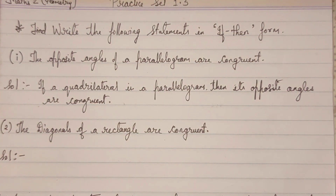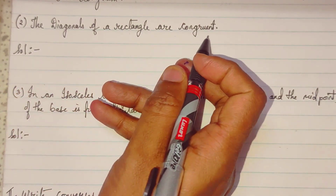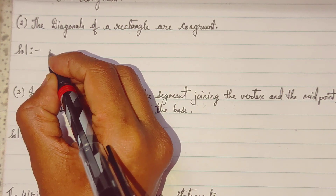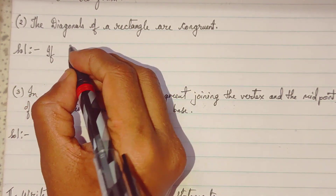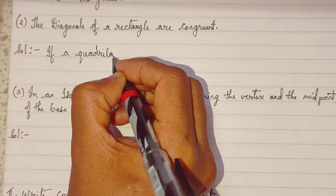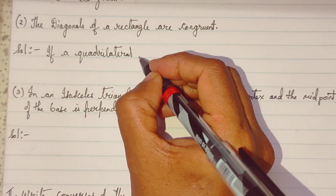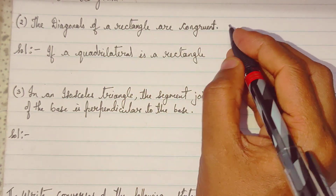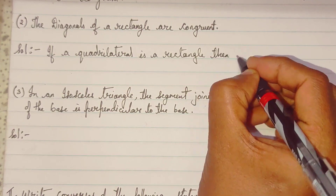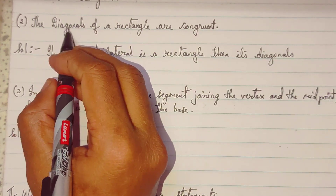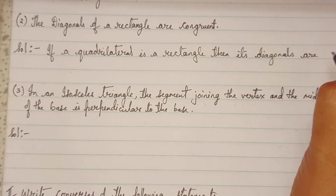In this way you have to change the simple statements into if-then form. Second question: 'The diagonals of a rectangle are congruent.' They are talking about a rectangle. So in if-then form: if a quadrilateral is a rectangle, then its diagonals are congruent.